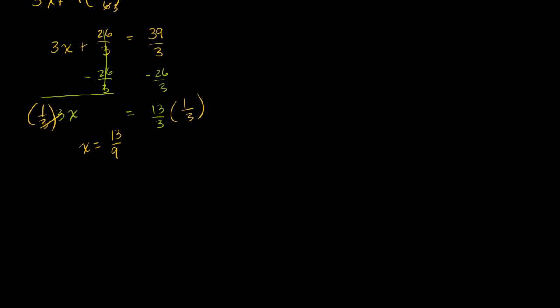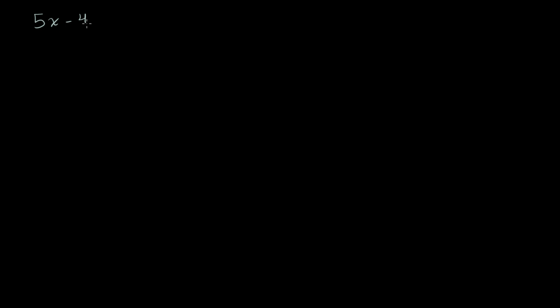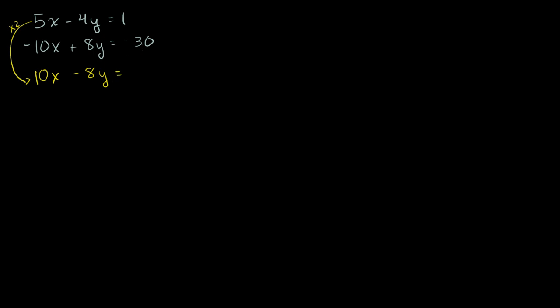Let's see if we can stumble upon something a little less consistent. Let's say we have 5x minus 4y is equal to 1, and negative 10x plus 8y is equal to negative 30. I'm tempted to do elimination here because I have a negative 10x and a 5x. If I multiply the top equation by 2, I get 10x minus 8y is equal to 2. Adding the left-hand sides together, we get 0x plus 0y is equal to negative 28.